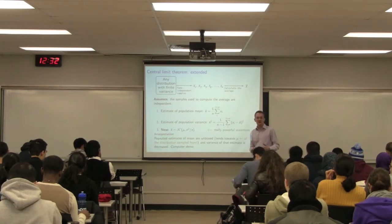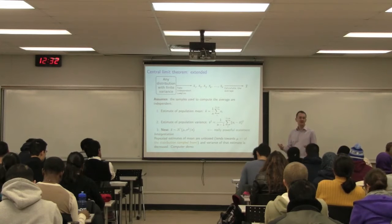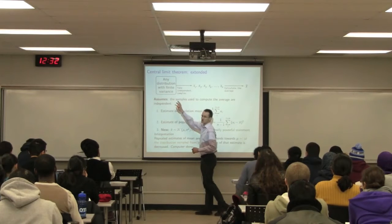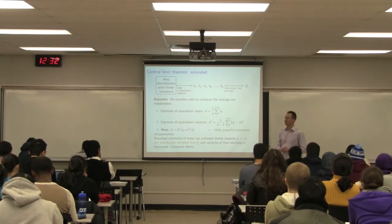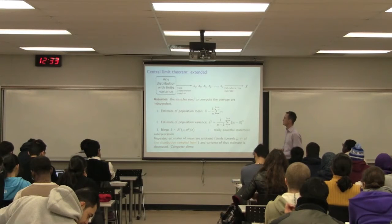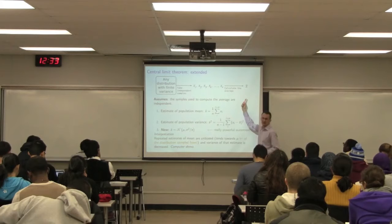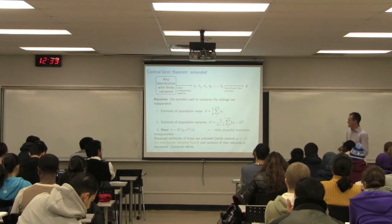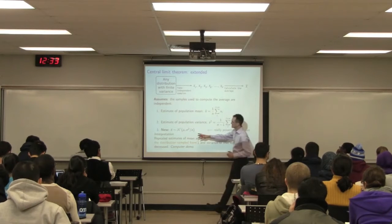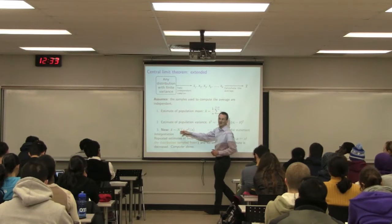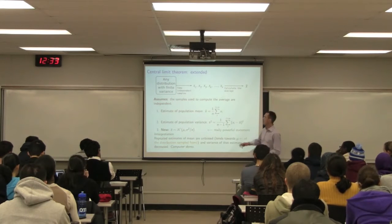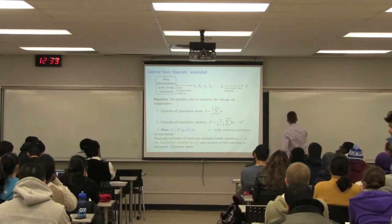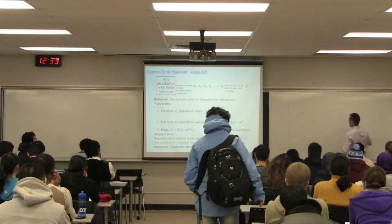The reason we covered the central limit theorem last time was because it naturally leads to confidence intervals. Let's recap: if we've got data from an unknown distribution — we don't really care what it is, as long as that distribution has finite variance — and we take independent samples, we calculate the average x-bar. That x-bar is going to come from a distribution which is normal, even if we take data from a uniform distribution, an F distribution, or some other distribution with a long tail.